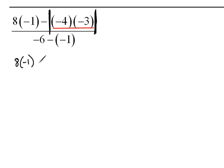So we have 8 times negative 1 minus, and then my absolute value, negative 4 times negative 3. 4 times 3 would be 12, and because the signs are the same, it will be positive.